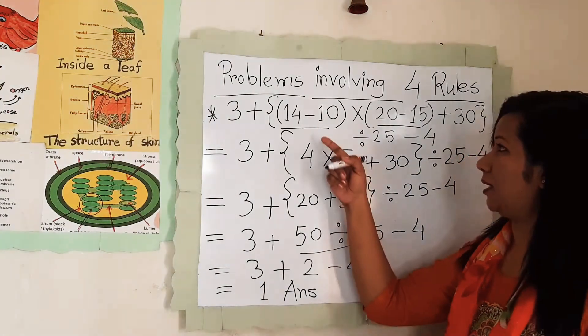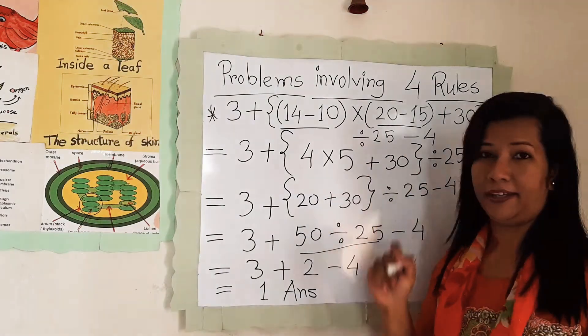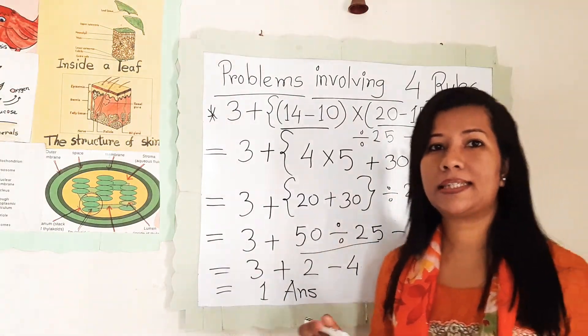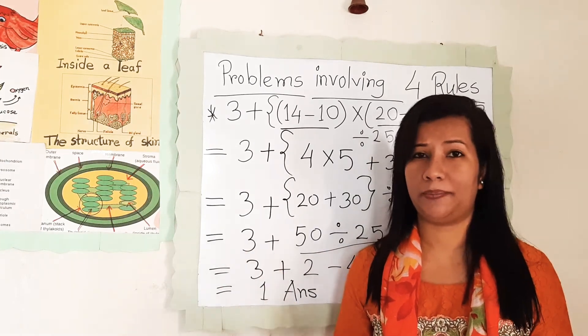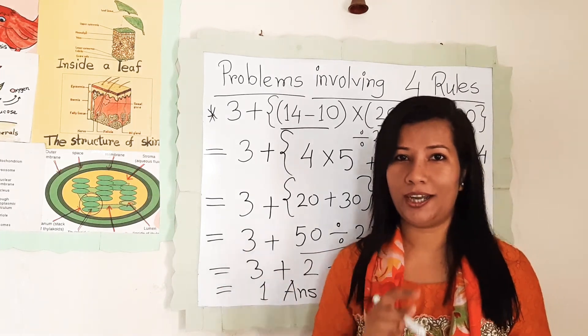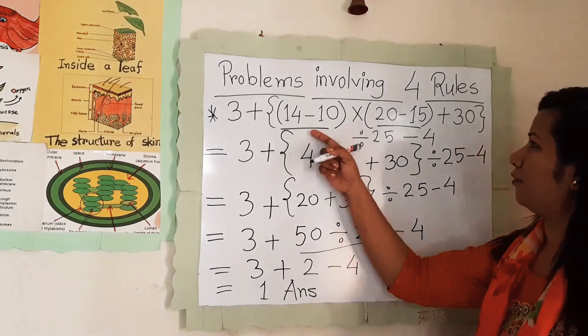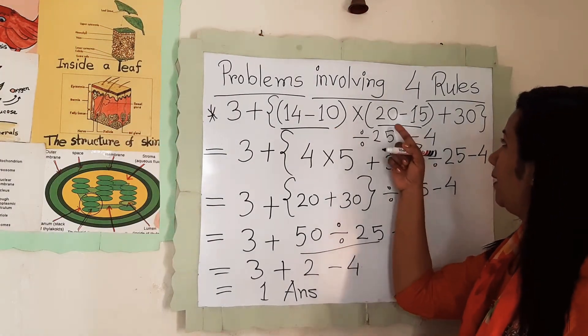So first we will start here with the brackets. Calculate inside the bracket first and open the brackets from the first bracket to second bracket then third bracket. Here 14 minus 10 and here is 20 minus 15.